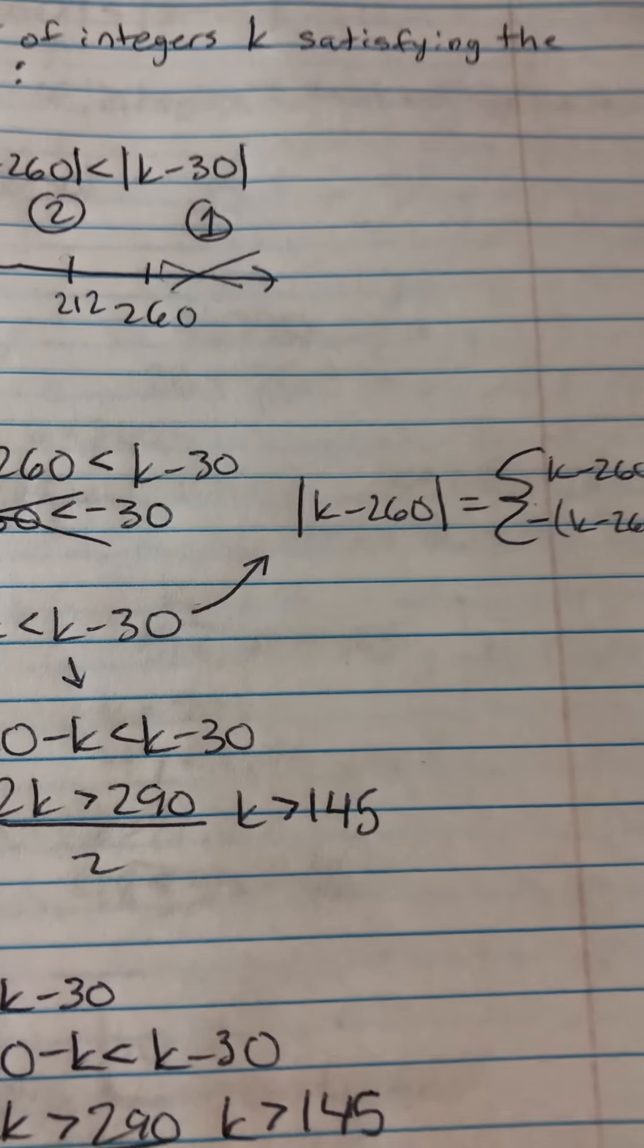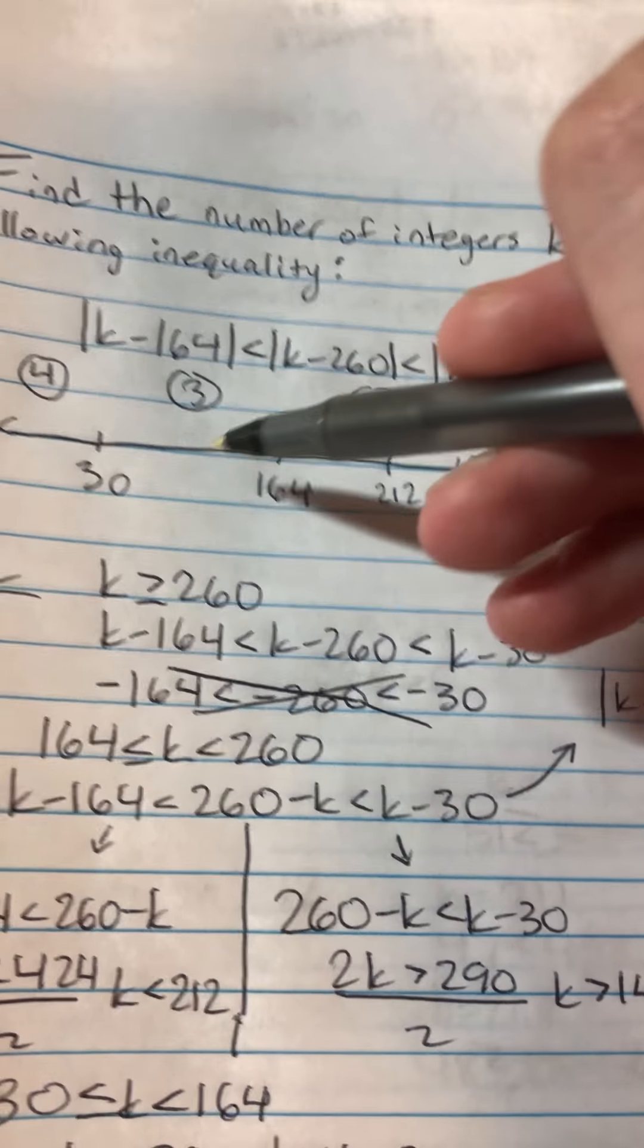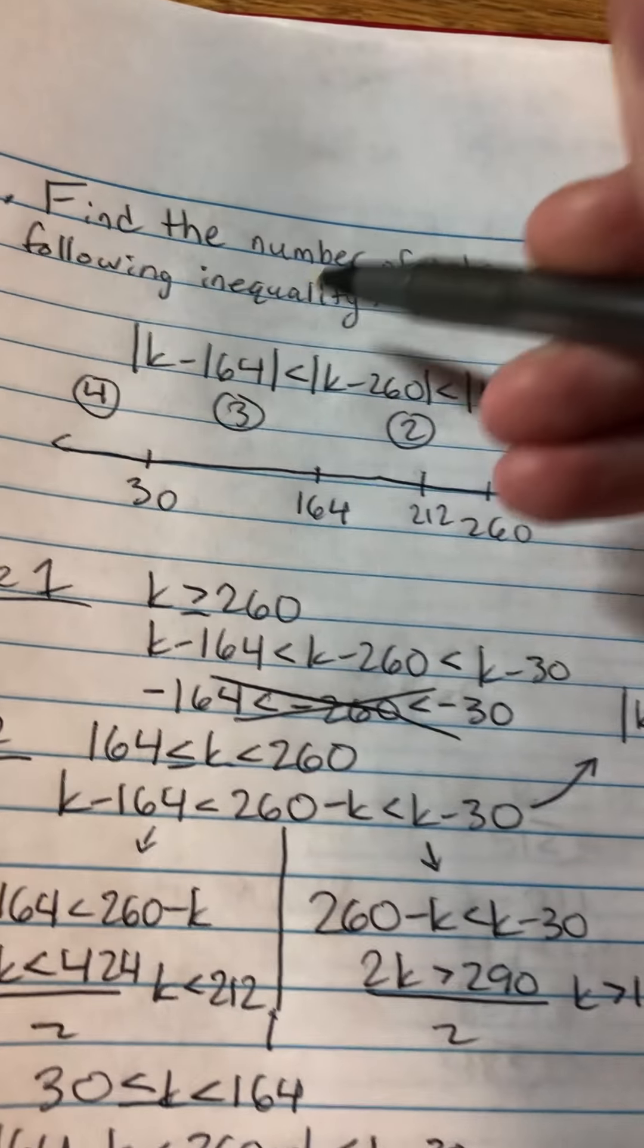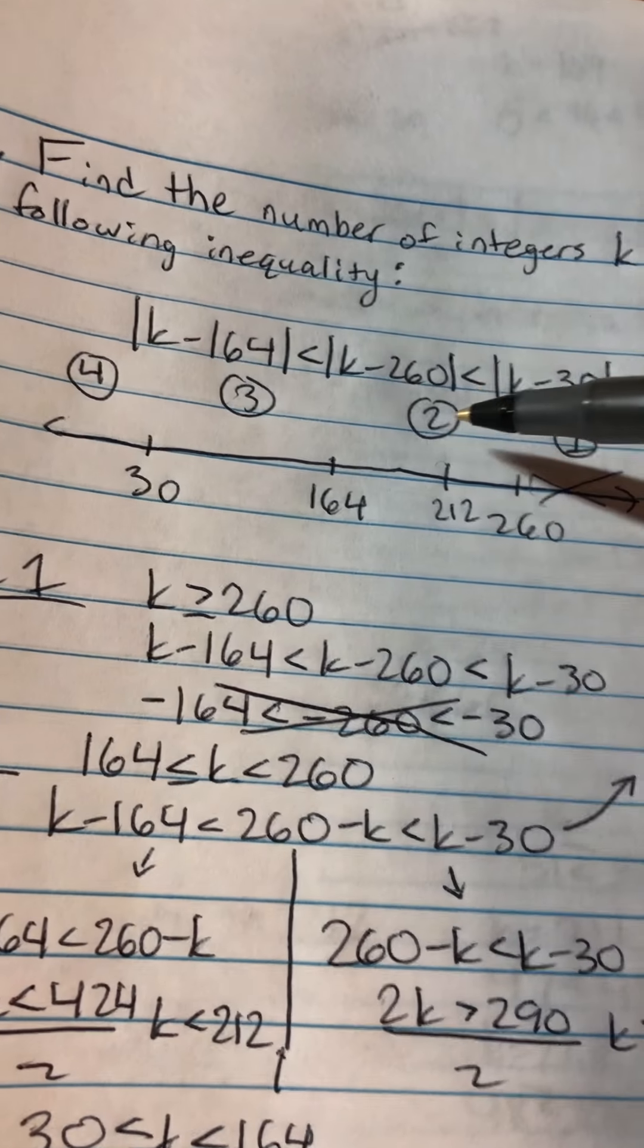And I get k is greater than 145. And I won't mark that right now because 145 is less than 164. And I want to check if case 3 will match case 2.